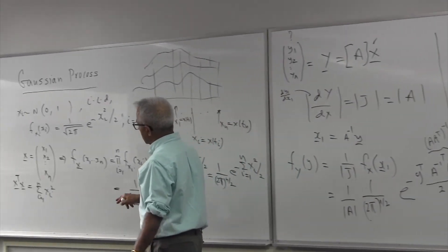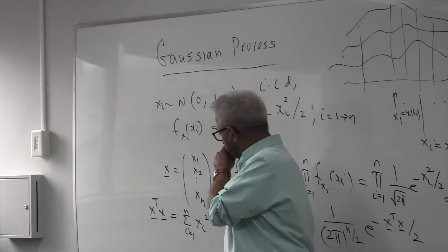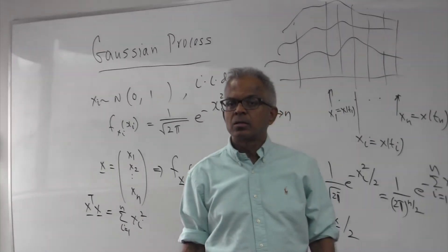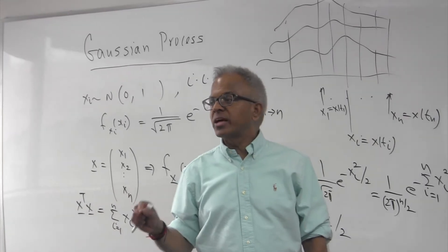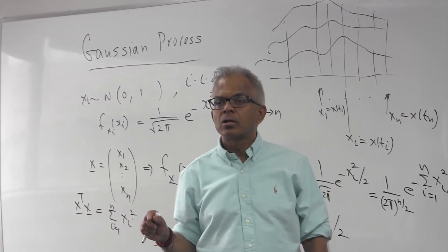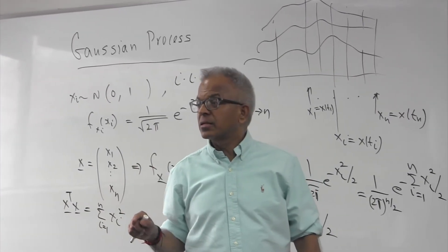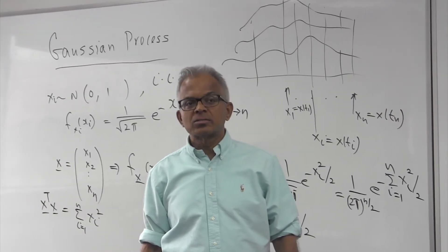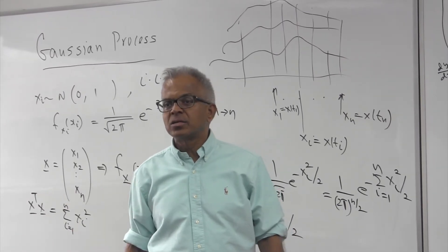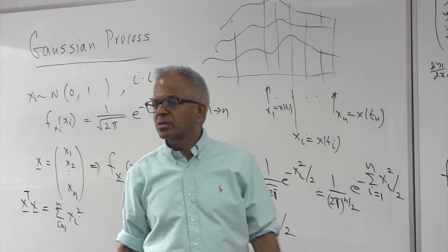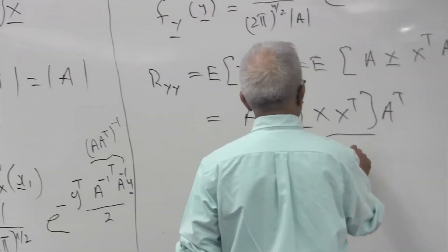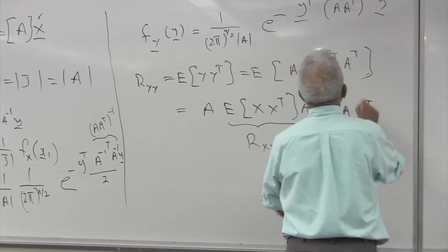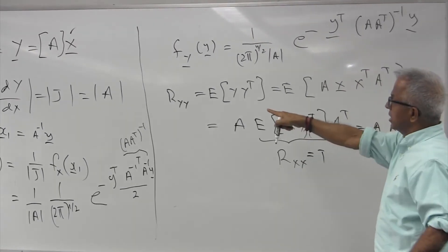Since x_i are independent with unit variance and zero mean, the diagonal entries of R_xx are all ones and the off-diagonal entries are zero. So R_xx is the identity matrix. Therefore R_yy = A I A^T = A A^T. Also, det(R_yy) = det(A A^T) = det(A)² , so det(A) = det(R_yy)^{1/2}.